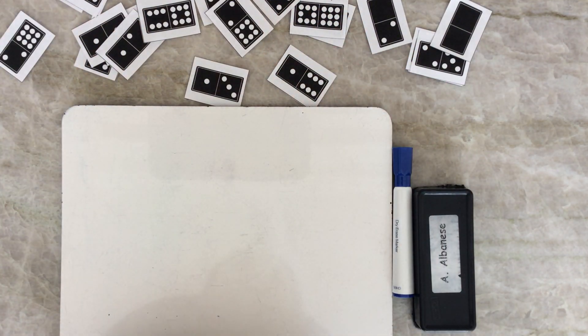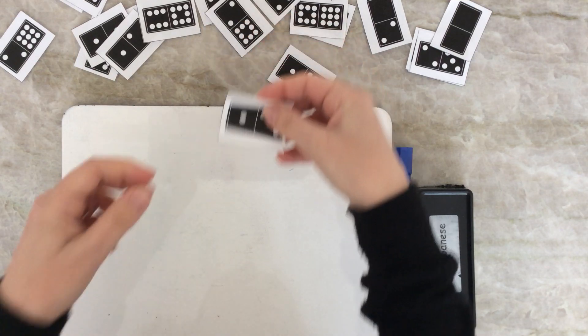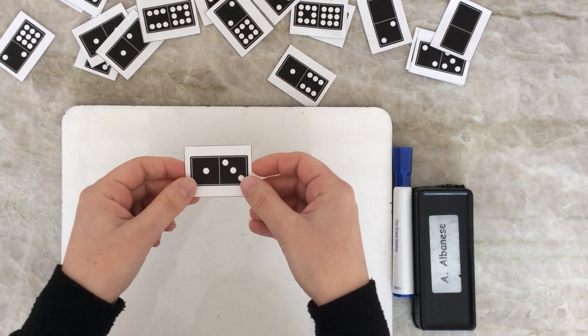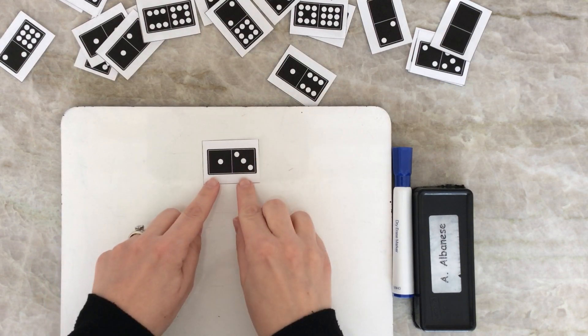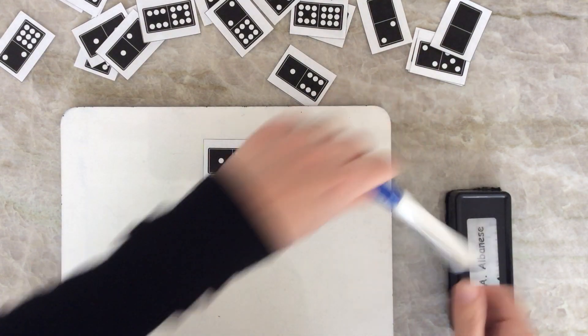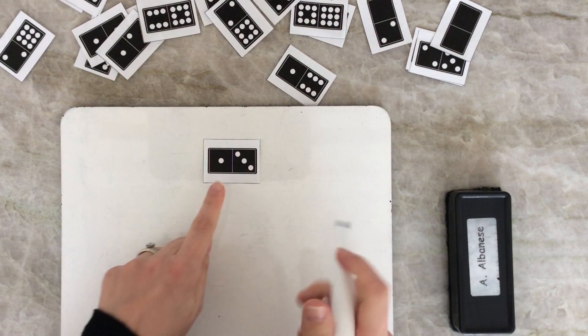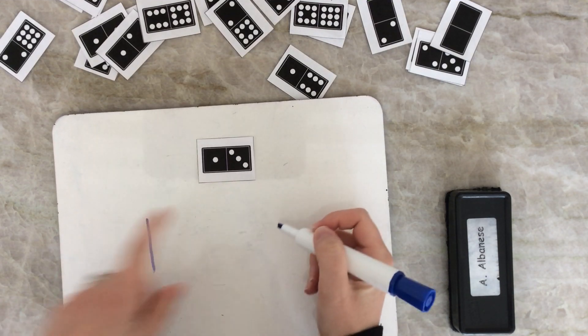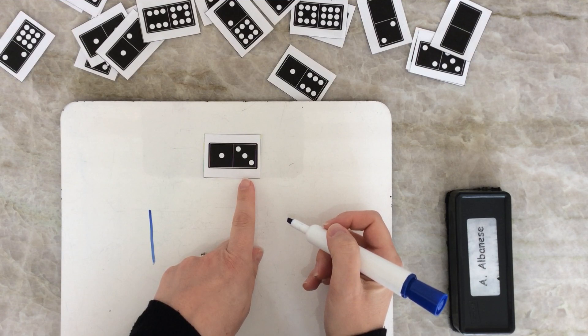We're going to use a domino, and we're going to see if we can write an addition sentence and solve it. So take a look at this one. How many dots do you see over here? I see 1. What about on this side? I see 3.